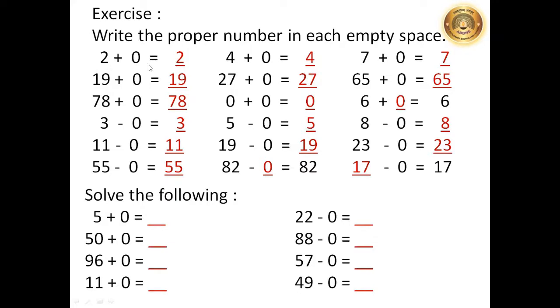2 plus 0 is equal to 2. 19 plus 0 is equal to 19. 78 plus 0 is equal to 78. 3 minus 0 is equal to 3. 11 minus 0 is equal to 11. 55 minus 0 is equal to 55.